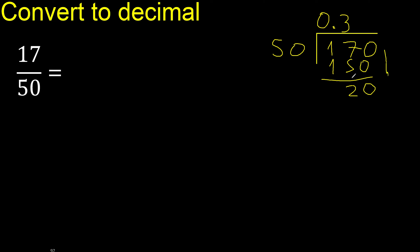There is no number that goes down, therefore complete — always complete with 0. Point is here, point only once. 50 multiply by which number? 50 multiply by 4 is exact.